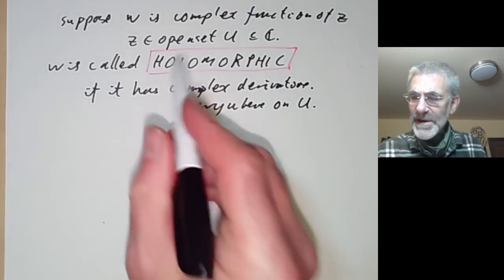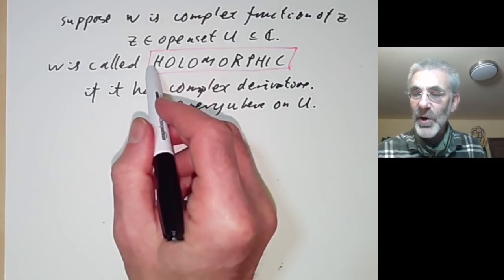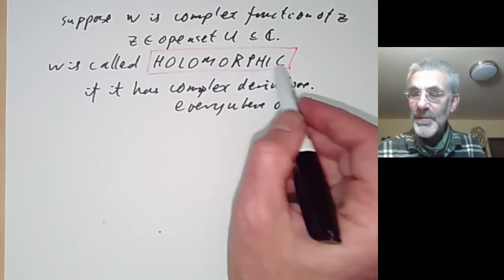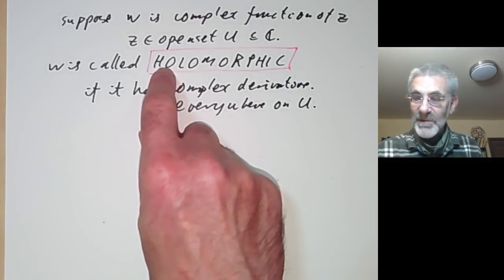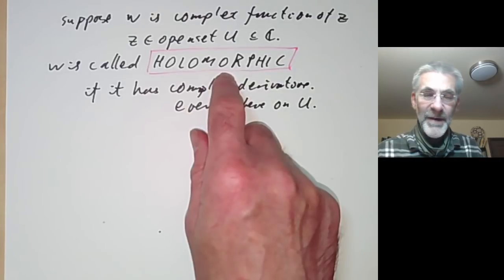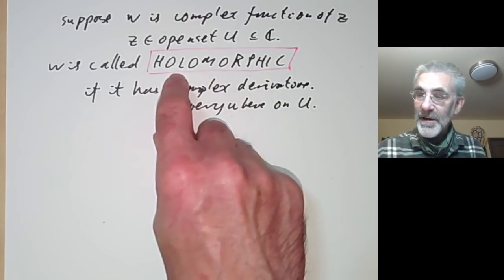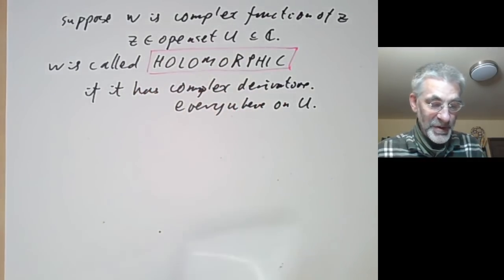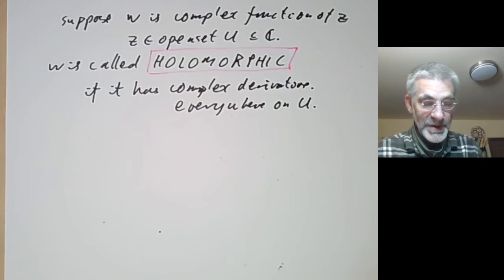The reason for the name holomorphic is a little bit mysterious. Holo means whole or entire, and morphic means shape or form. So holomorphic means whole shape or whole form, and I've no idea why this was used to mean a differentiable complex function — maybe someone just liked obscure Greek words.